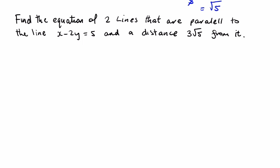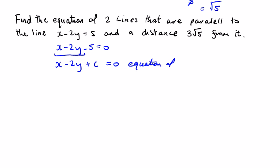When we get a question like this — find the equation of two lines that are parallel to x minus 2y equals 5 and at a distance of 3 root 5 from it — there's a little bit more work involved. The starting point is to write the equation of any line parallel: x minus 2y plus c equals 0, since parallel lines have the same x and y coefficients.